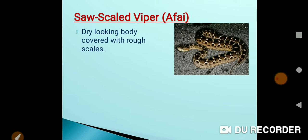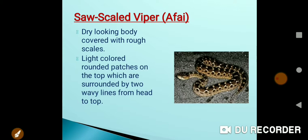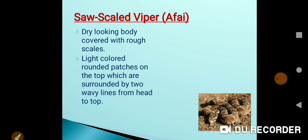The last one is the Saw-scaled Viper, also called Afai. It has a dry-looking body covered with rough scales. It is mostly found in dry regions and can hide in the sand. It has light-colored rounded patches on the top of its body, surrounded by two wavy lines.